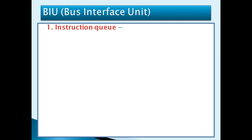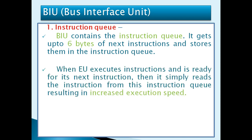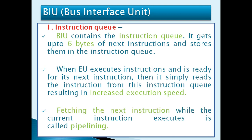The second functional unit of the 8086 architecture is the Bus Interface Unit (BIU). The first part is the Instruction Queue. The BIU contains the instruction queue, which gets up to 6 bytes of the next instruction and stores them. The Execution Unit executes instructions, and when ready for the next instruction, it simply reads it from the instruction queue, resulting in increased execution speed. Fetching the next instruction while the current instruction executes is called pipelining — this pipelining concept is included in the 8086 microprocessor, which was not included in the 8085.